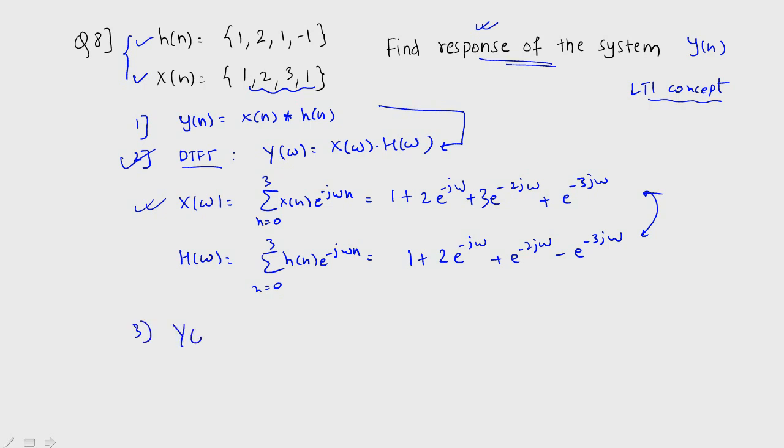So after solving you will get Y of omega. You have to multiply this first equation and the second equation. If you multiply you will get the answer as 1 plus you have 4 times E raised to minus J omega, then plus 8 times E raised to minus 2 J omega, then plus 8 times E raised to minus 3 J omega, then 4 J omega, then 5 J omega 4 times, then you have the 6 J omega. So this is the final answer.